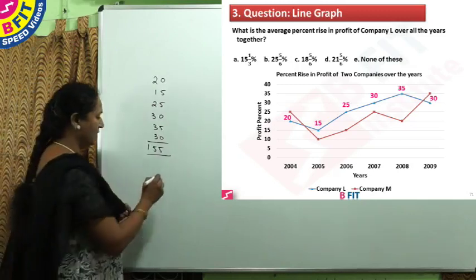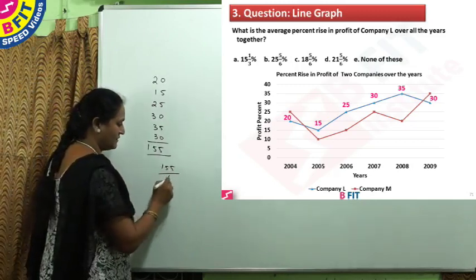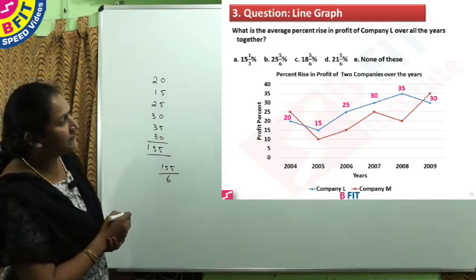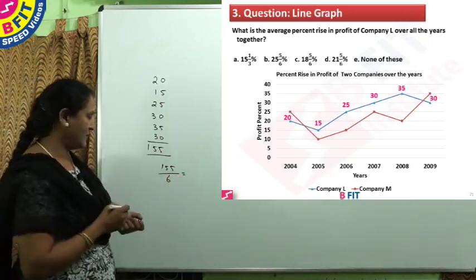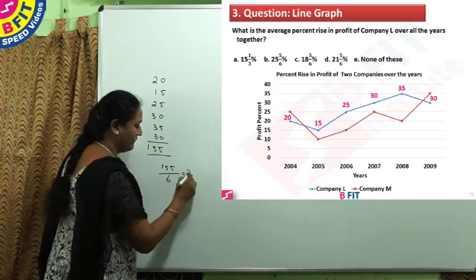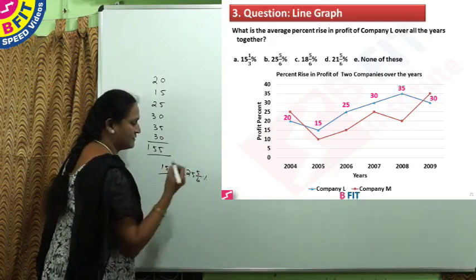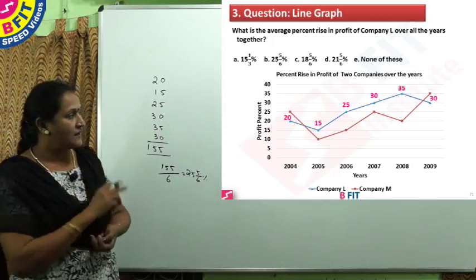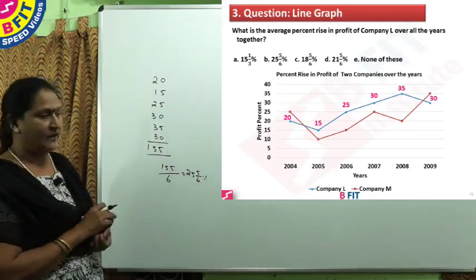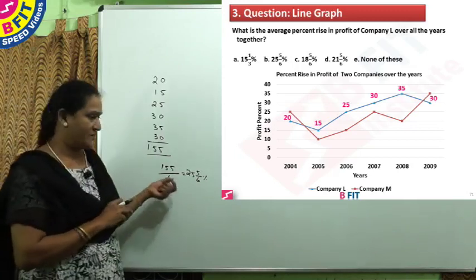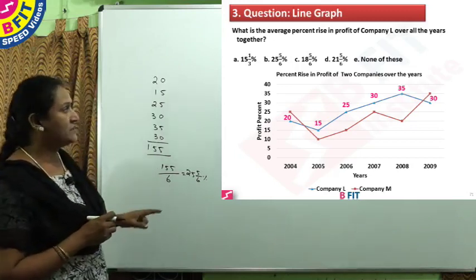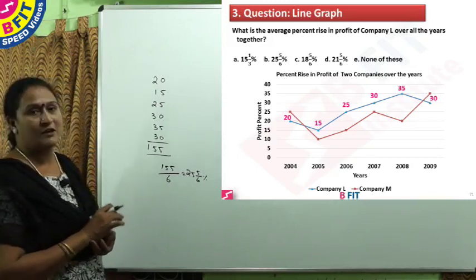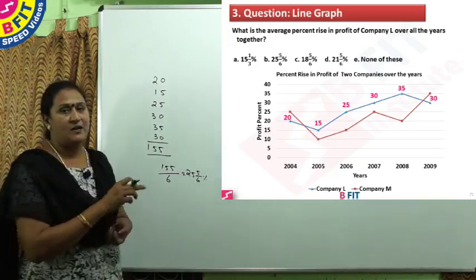The average will be found by dividing the total by the number of years. We have 6 years, so the average percent rise is 155 ÷ 6. Now 150 ÷ 6 is 25, leaving a remainder of 5, giving 155/6 percent. So the average percent rise in profit for company L, adding all data (155) and dividing by 6 terms, is 155/6 percent. The answer is Option D.